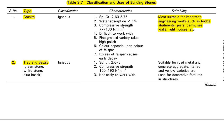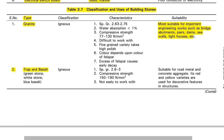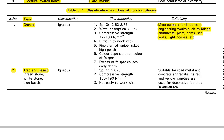The suitability or uses of granite: granite is most suitable for bridges, abutments, piers, dams, sea walls, and lighthouses. This is very important — in many competitive examinations questions are asked about this. They may ask: what is the most suitable stone for construction of dams, abutments, bridges, sea walls, or lighthouses? They also ask about the specific gravity, compressive strength, and classification of granite.